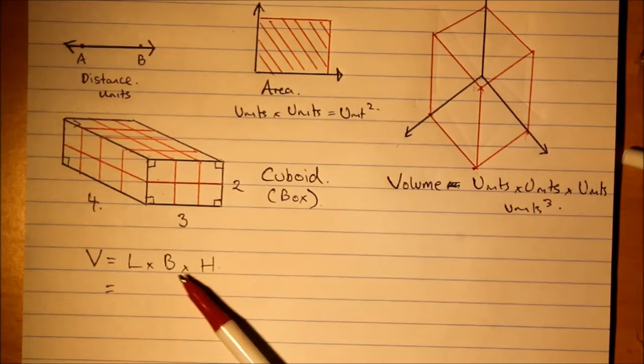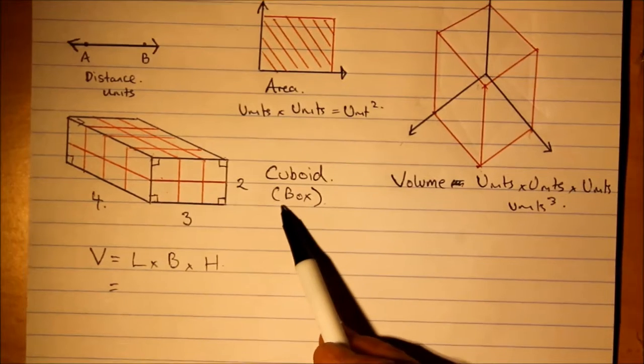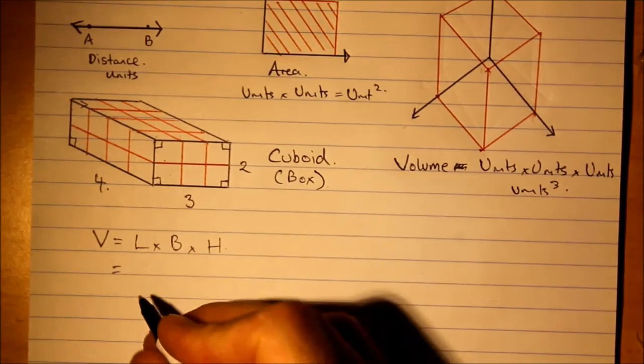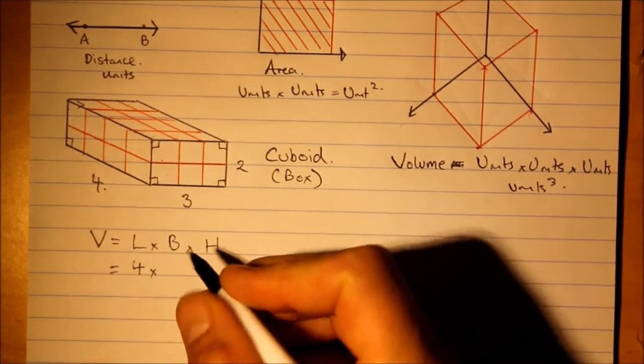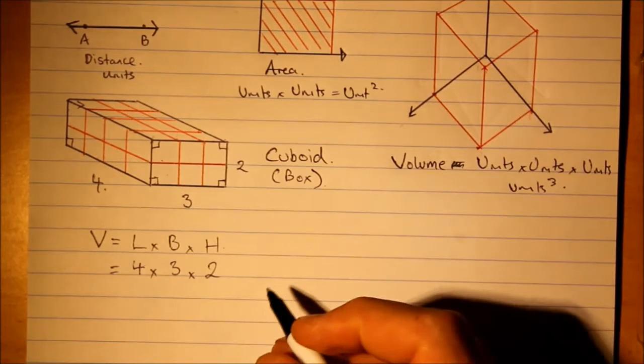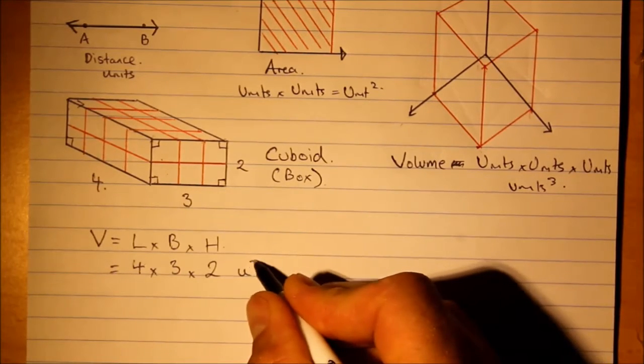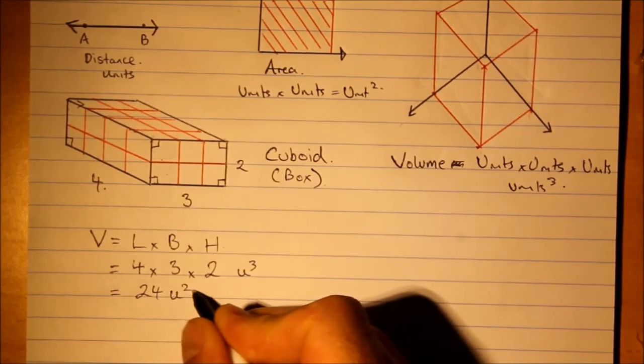Volume is length times breadth times height. Now, if your shape is a cuboid, you can use this formula. So length, we'll say it's four, times breadth is three, times height is two, and units cubed. So that's 24 units cubed.